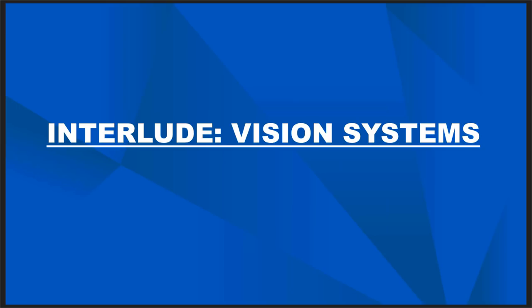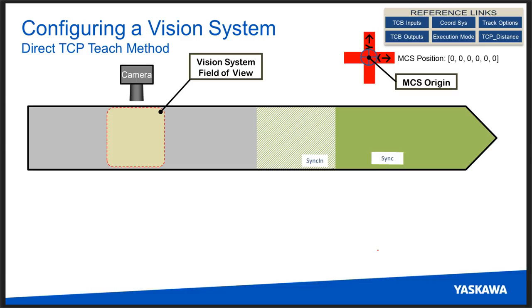At this point we need to talk about vision systems because our next example uses one. There are a couple of ways to set up conveyor tracking with a vision system. We'll start with the simpler version: using a direct TCP — tool center point — teach method.